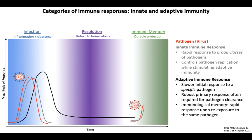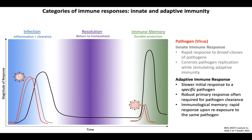In this phase, re-exposure with the same pathogen leads to the same type of immediate innate immune response observed during initial infection, shown in gray. However, the kinetics of adaptive immunity are quite different now that the individual is equipped with immunological memory that recognizes this specific pathogen. The memory cells of adaptive immunity undergo rapid reactivation upon re-exposure, which occurs more quickly and to a greater magnitude compared to the primary adaptive immune response.